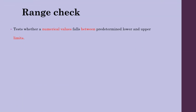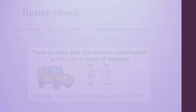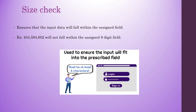Range check tests whether a numerical value falls between predetermined lower and upper limits. A good example is the speed limit set for a vehicle. Size check is another type of data entry control — it ensures that input data falls within the assigned field size. A common example is the password you enter in the digital environment.